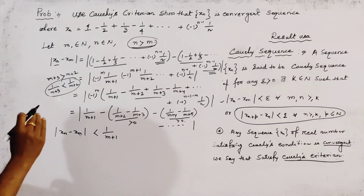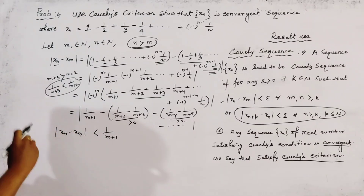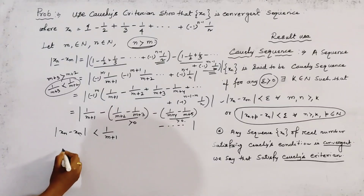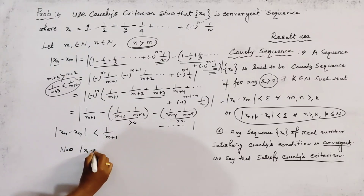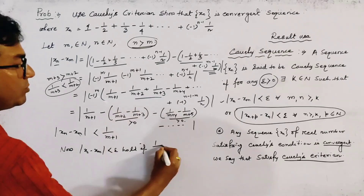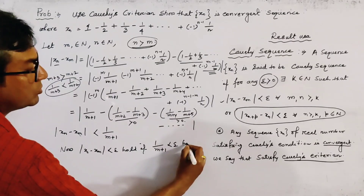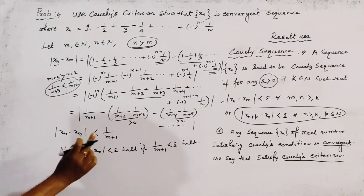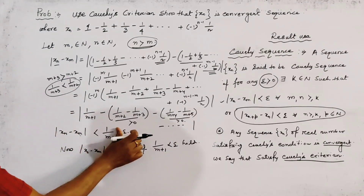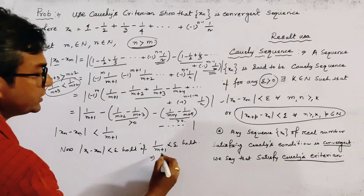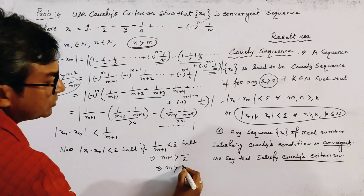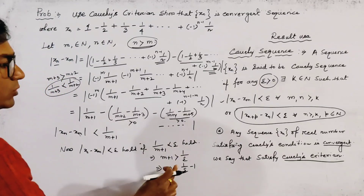Now, to satisfy the Cauchy condition we take a pre-assigned epsilon greater than zero. We have |xn - xm| < 1/(m+1) < epsilon, provided 1/(m+1) < epsilon. This gives m+1 > 1/epsilon, which means m > 1/epsilon - 1.